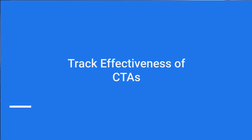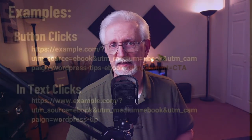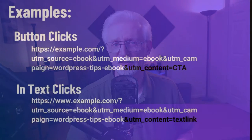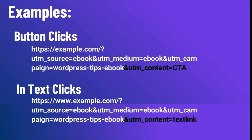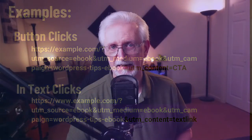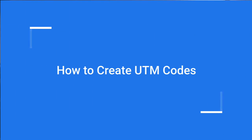You can also use UTM parameters to determine which call-to-action generates the most conversions. Using UTM parameters on your CTAs lets you see which one is getting the most clicks and conversions, and then use that data to improve your site and do some A/B testing.